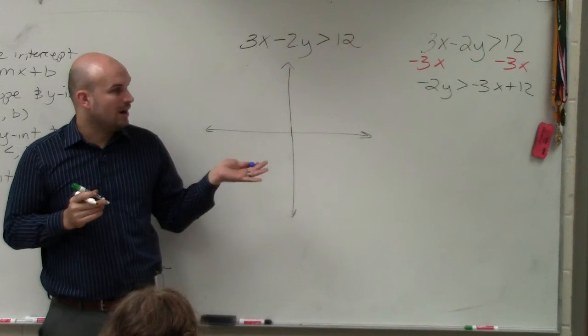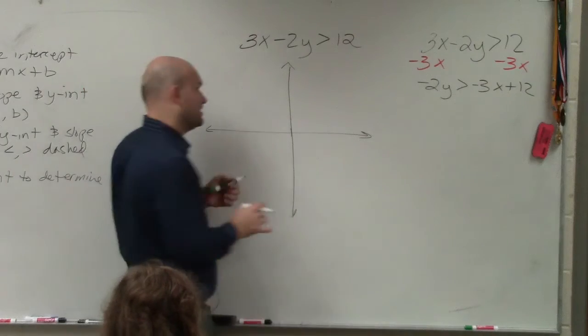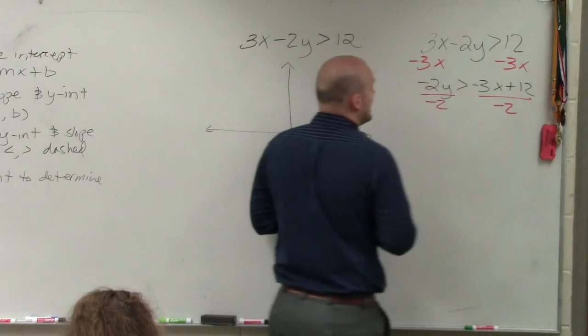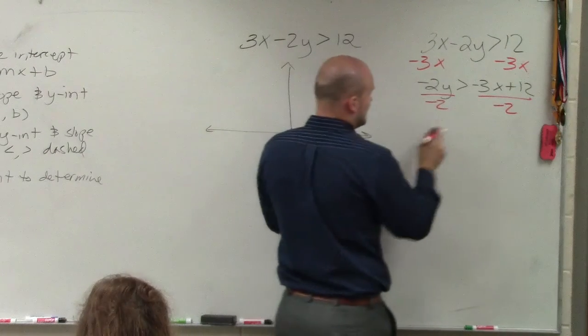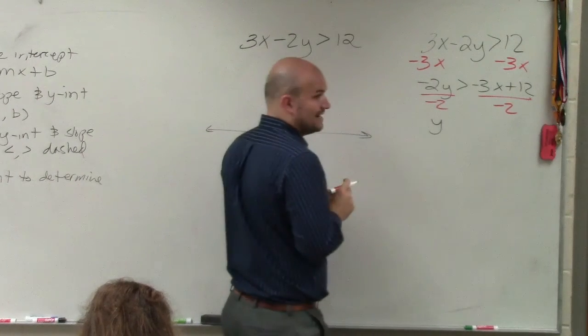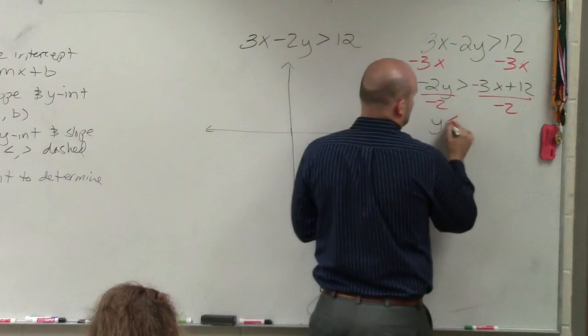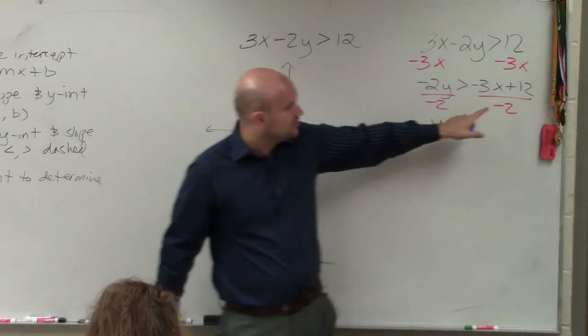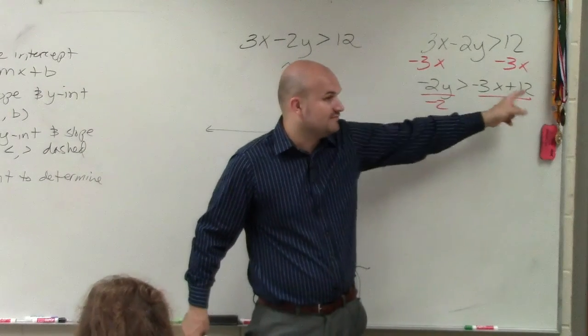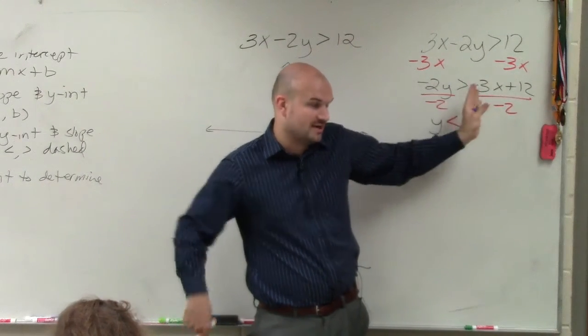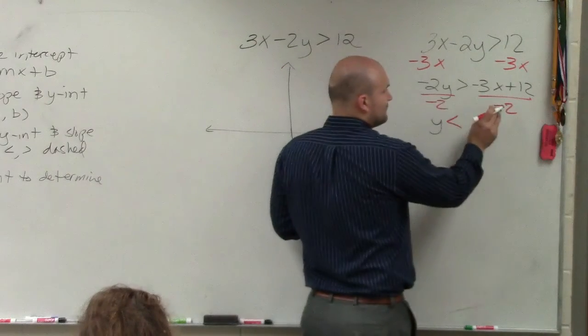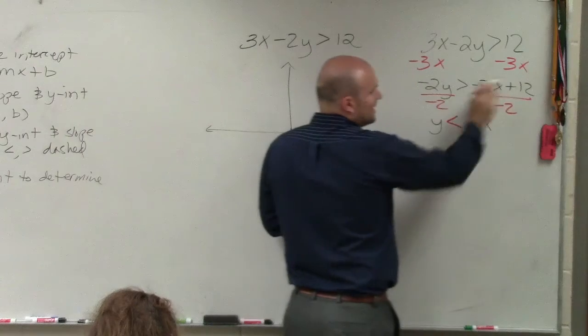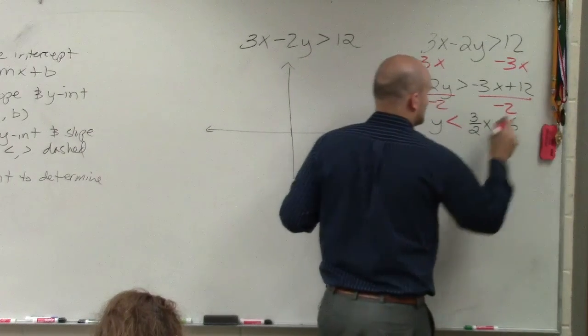Now you see my variable y is being multiplied by negative 2. So to undo multiplying by negative 2, I divide by negative 2. Now remember, whenever you multiply or divide by a negative number, you have to flip the inequality. Also remember that when you're dividing a quantity by a number, you have to divide both terms by that number. So therefore, negative 3 over negative 2 is a positive 3 halves x, and 12 divided by negative 2 is negative 6.